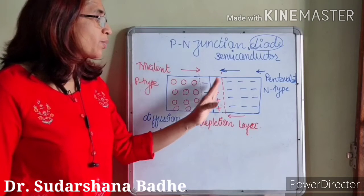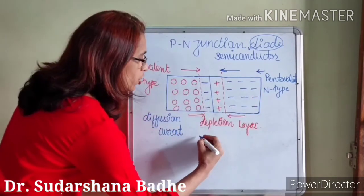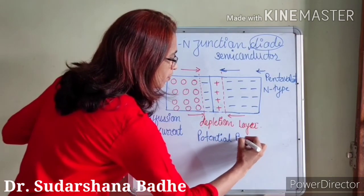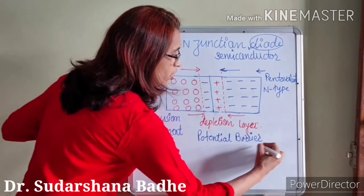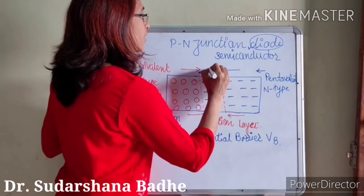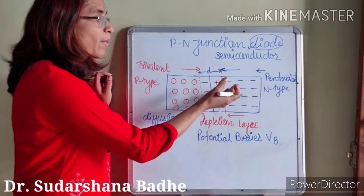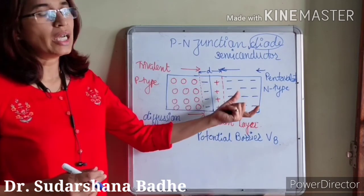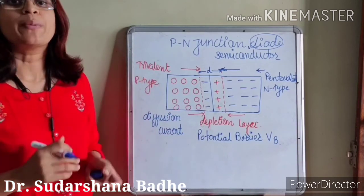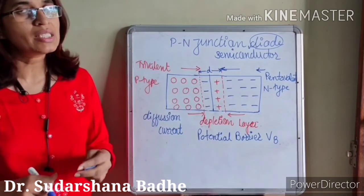Because of the formation of negative ions and positive ions, a potential difference is formed which opposes the electrons from crossing the junction. This potential is called the potential barrier, denoted by VB. The width of the depletion layer is denoted by D. This width depends on the amount of majority carriers present on the P side and N side — the more impurity we add to the crystal, the thinner the depletion layer. So D is inversely proportional to the amount of majority carriers on the P side and N side.